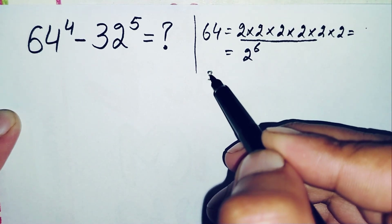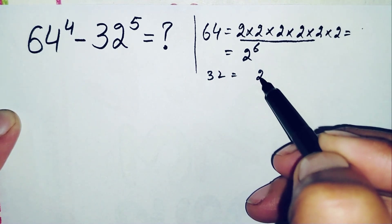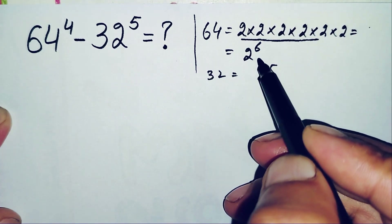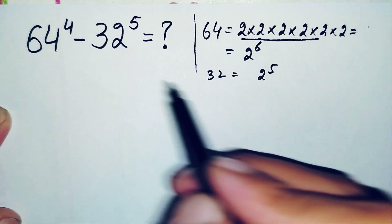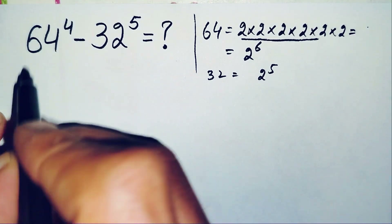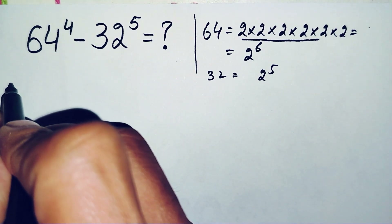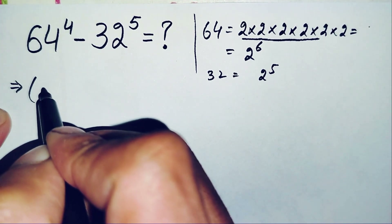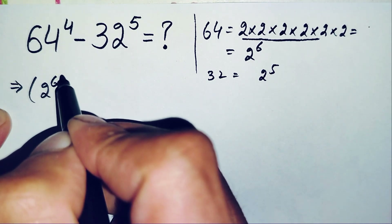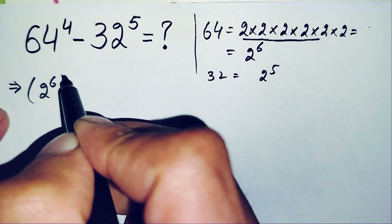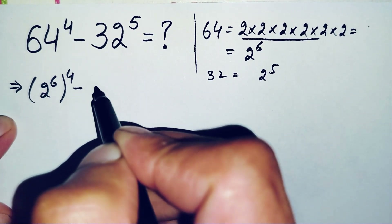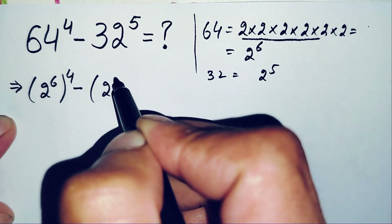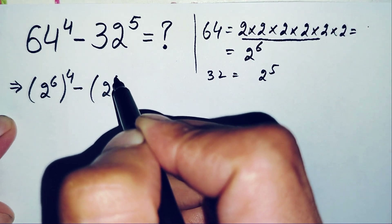Similarly, multiplying 2 five times gives 32, so we replace 32 with 2 raised to power 5. We now substitute: 64 becomes 2 raised to power 6, and 32 becomes 2 raised to power 5. The expression becomes (2 raised to power 6) all raised to power 4, minus (2 raised to power 5) all raised to power 5.